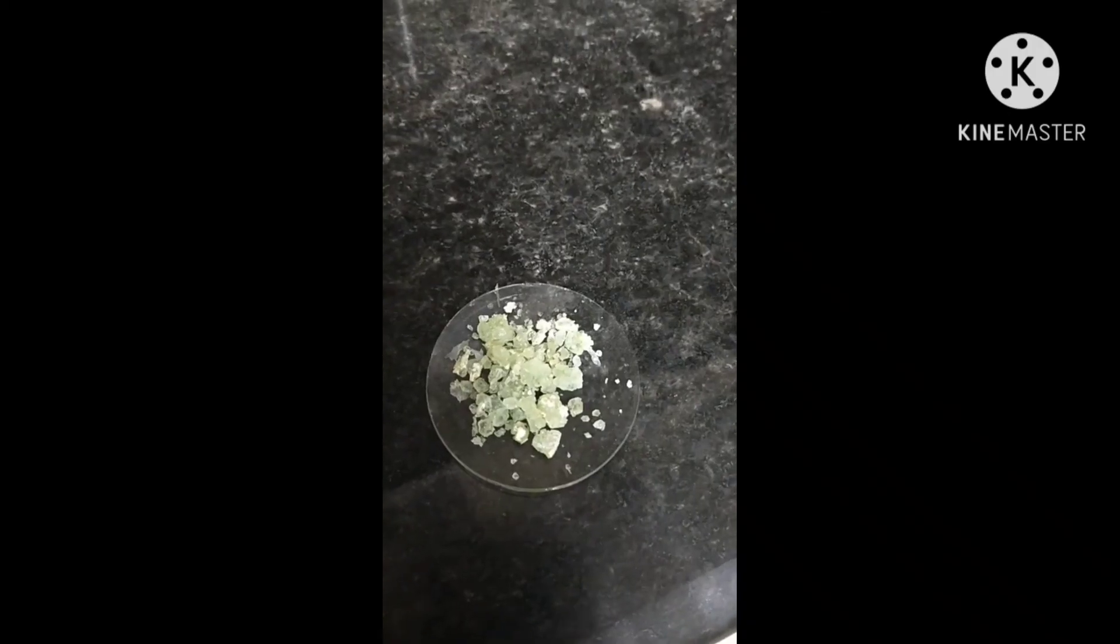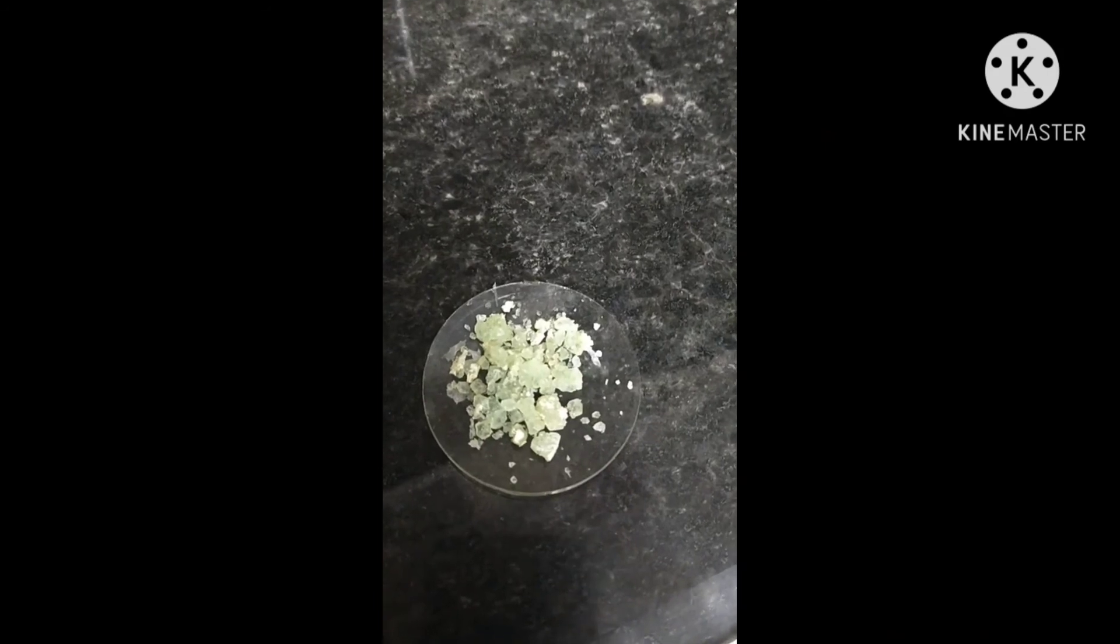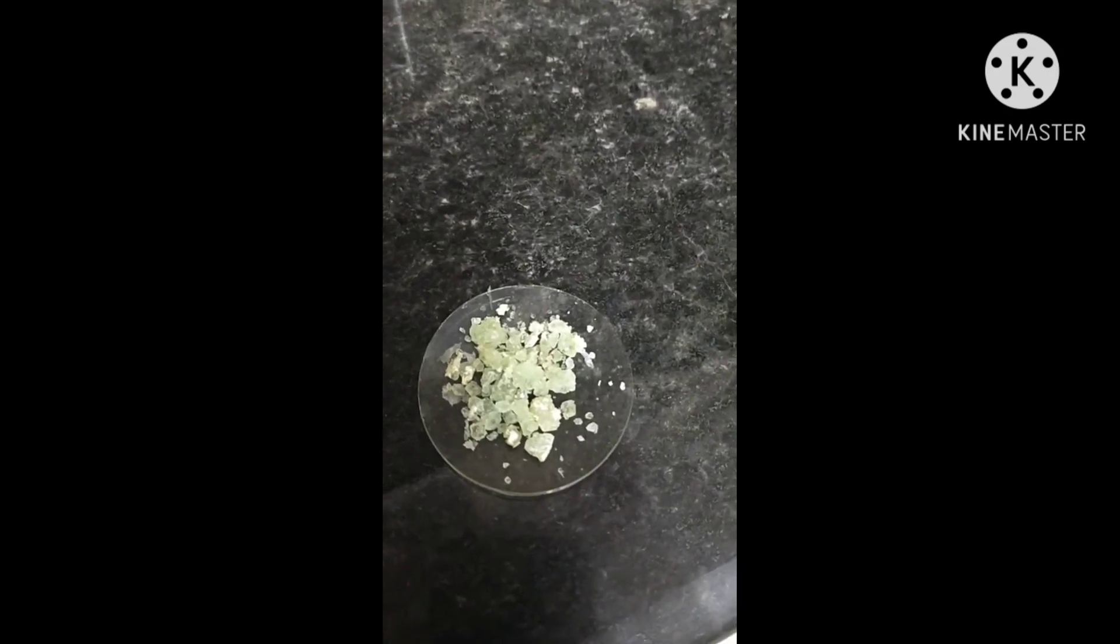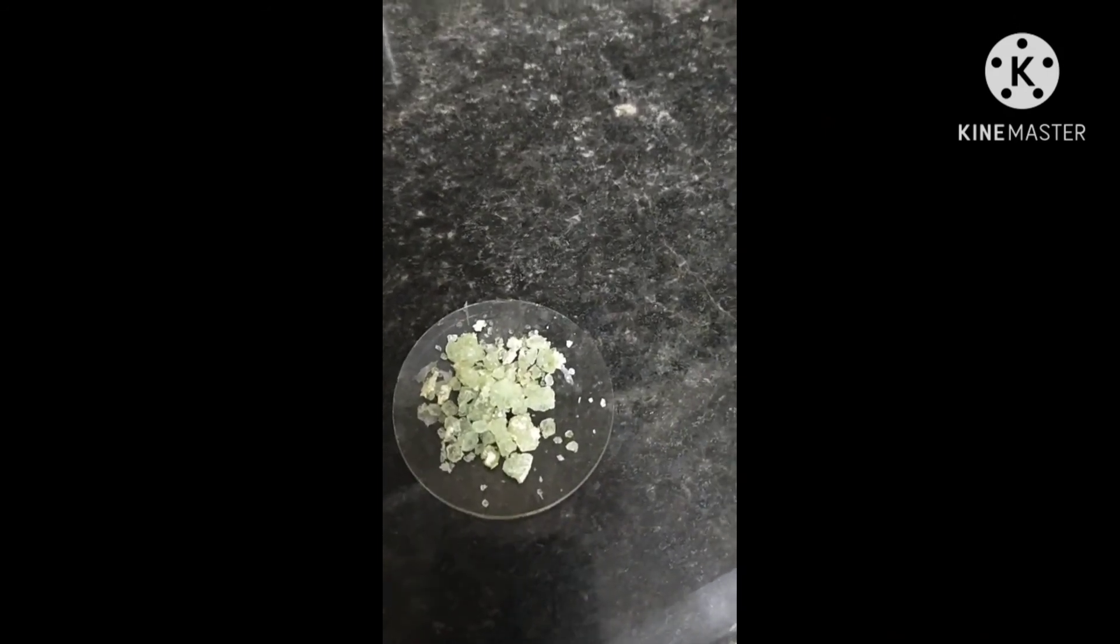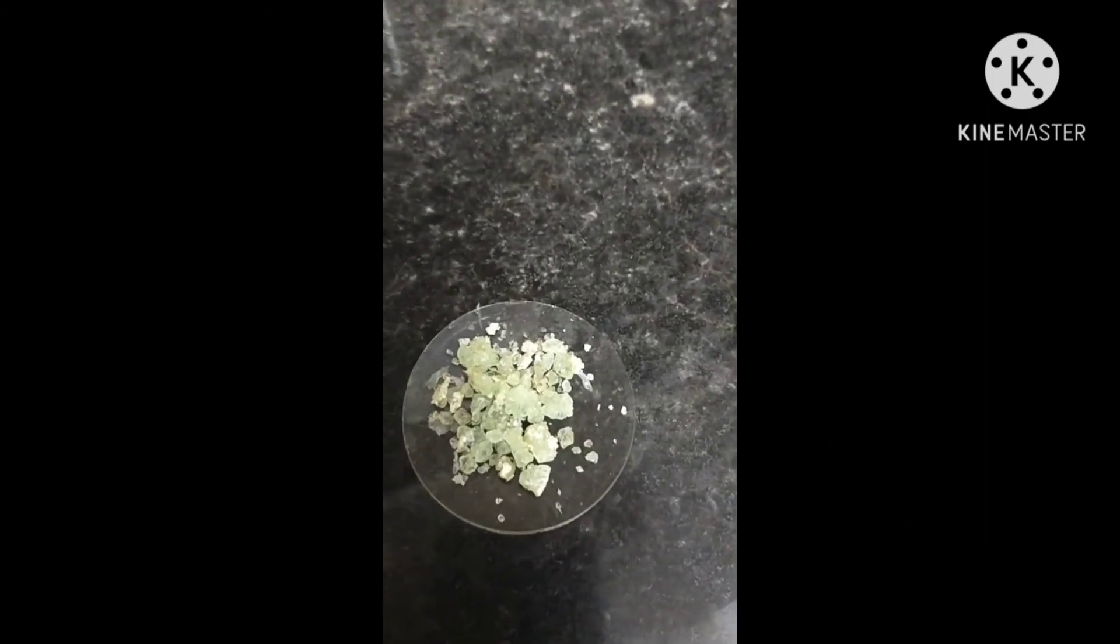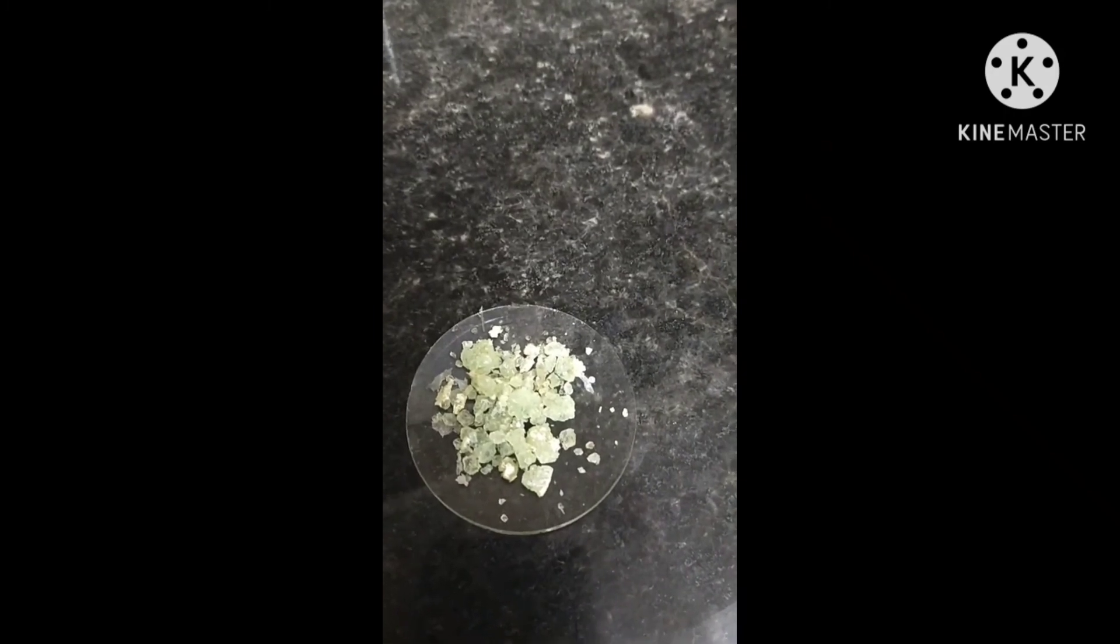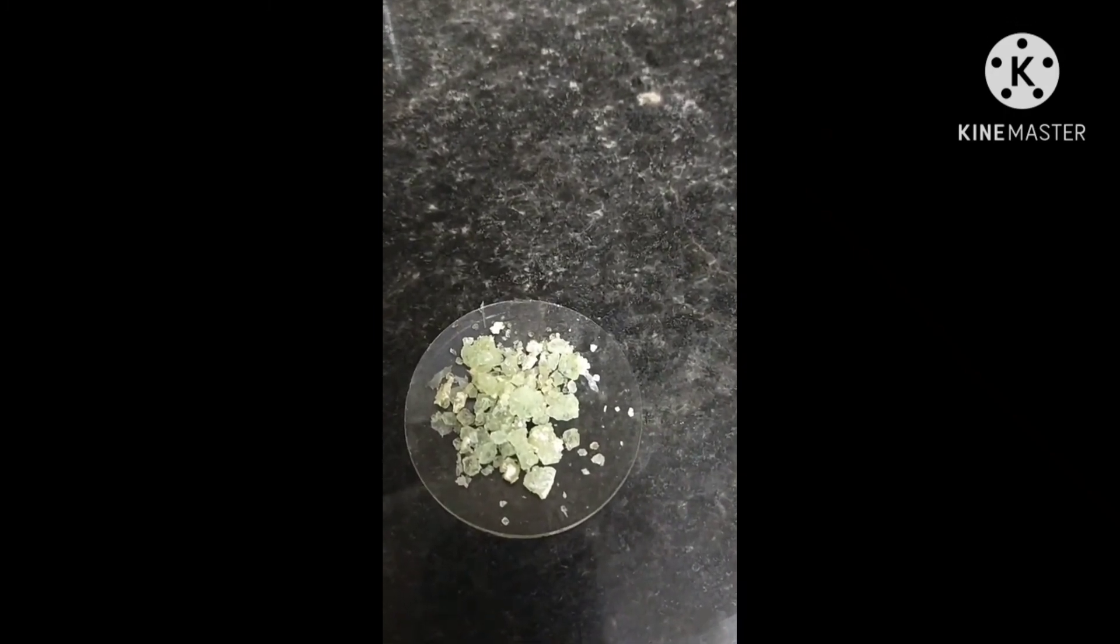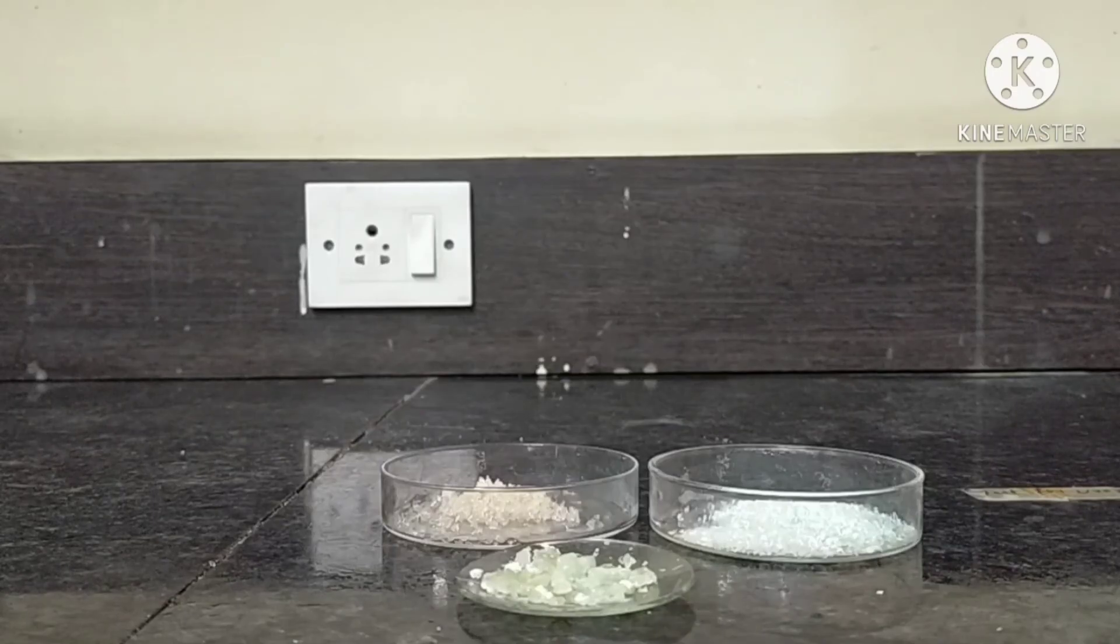After drying the crystals, we observe that the yield of ferrous ammonium sulphate crystals is 3.8 grams. The color of ferrous ammonium sulphate crystals is pale greenish. The shape of ferrous ammonium crystals is monoclinic.